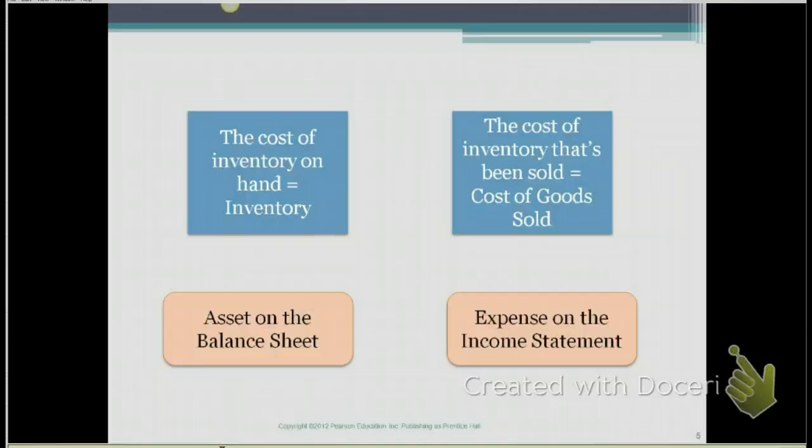When that inventory is sold, it becomes an expense and we call that expense cost of goods sold. So you need to know the difference between inventory and cost of goods sold. Inventory is the cost of the items that we have purchased and we have them on hand to resell to customers. Once that inventory is sold, it is a cost of goods sold and cost of goods sold is an expense account.